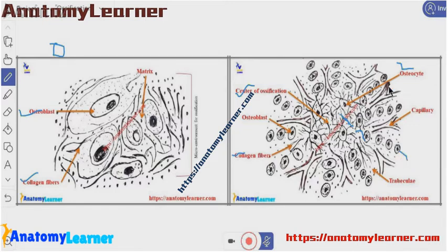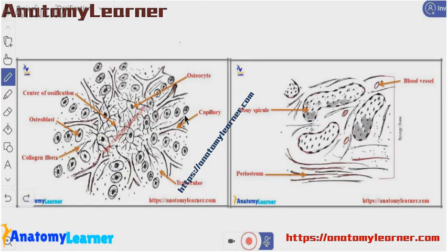These bony spicules are joined with other bony spicules and form the beam or trabeculae. These are the trabeculae or spongy or cancellous bone.